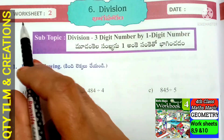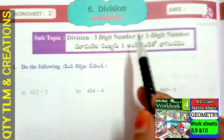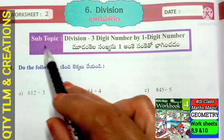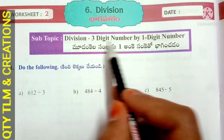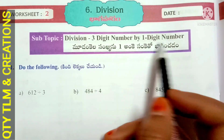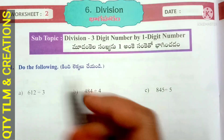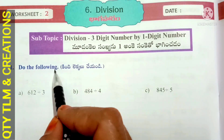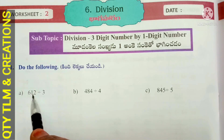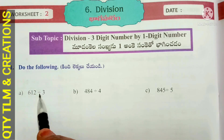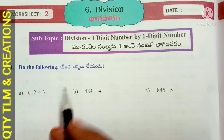Next, Worksheet Number 2. Subtopic: Division of a 3-digit number by a 1-digit number. Do the following. First one: 612 divided by 3.